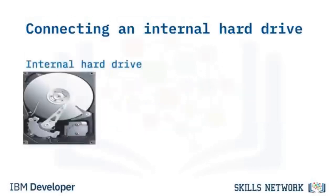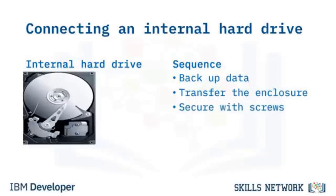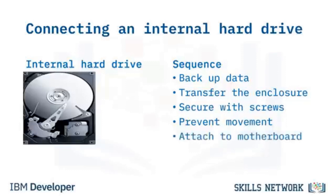To install an internal hard drive: back up your data first, then transfer the hard drive enclosure to the new drive if present. Remove the old drive by unscrewing it from the enclosure. Place the new drive in the enclosure, secure it with screws (ideally two on each side to prevent rattling), insert it into the hard drive slot, and attach it to the motherboard using SATA or PATA cables. SATA cables can be connected in either direction. Finally, connect the power supply to the hard drive.